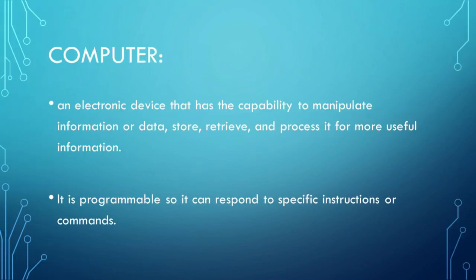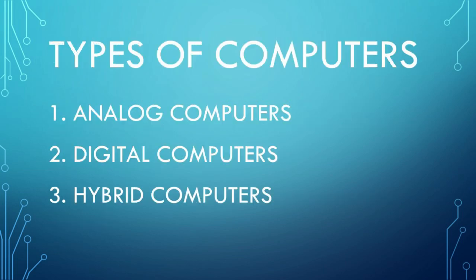Types of Computers. A computer is an electronic device that has the capability to manipulate information or data — to store, retrieve, and process it for more useful information. It is programmable so it can respond to specific instructions or commands.